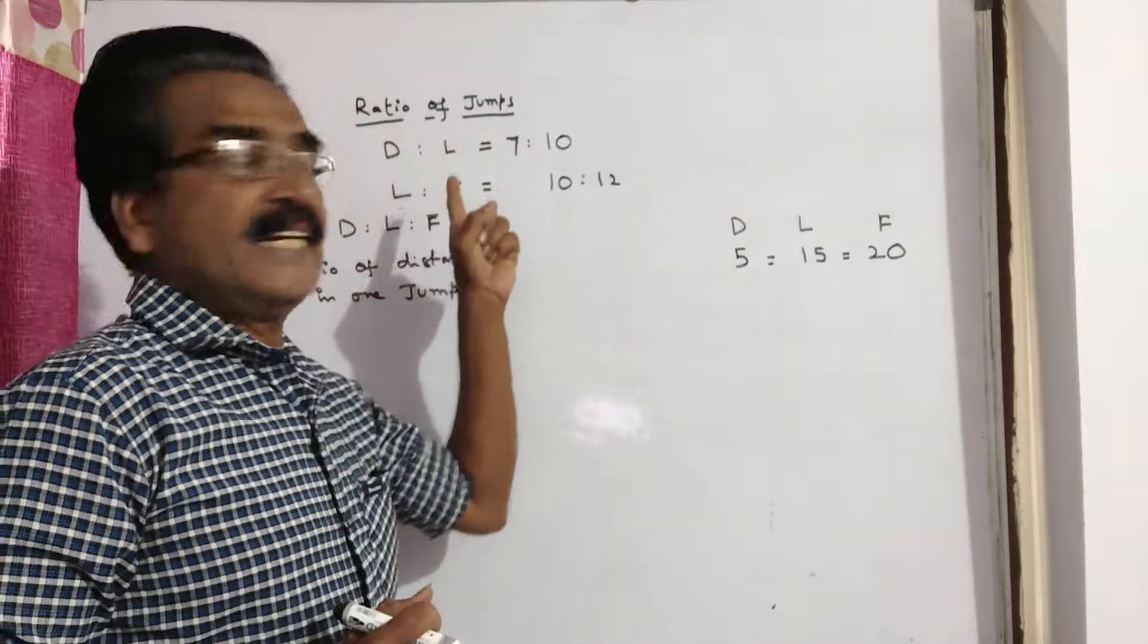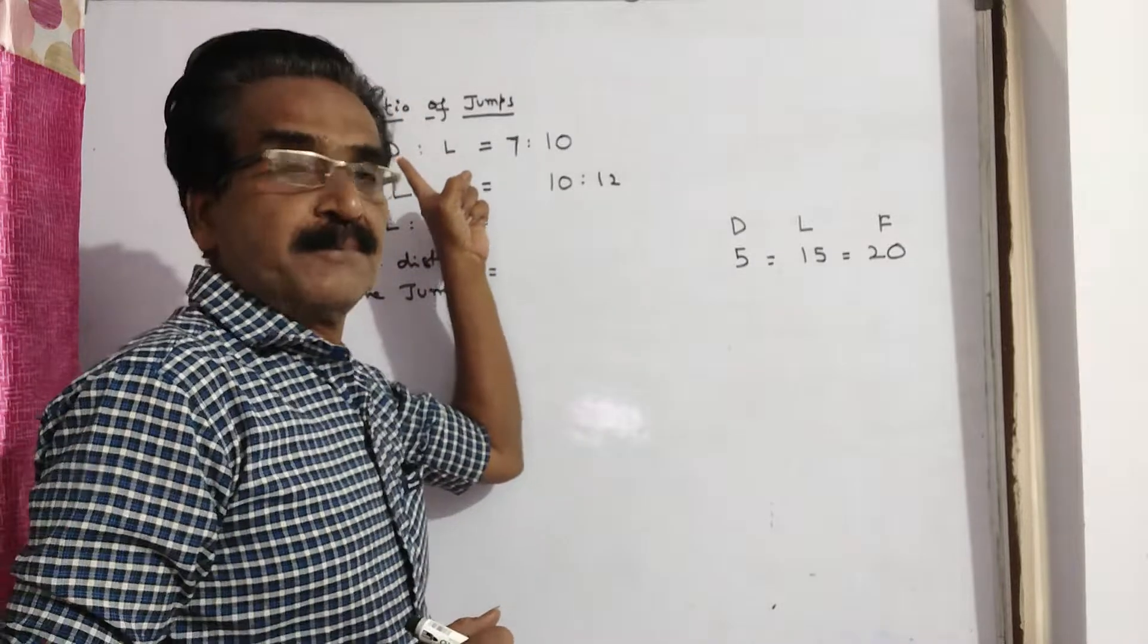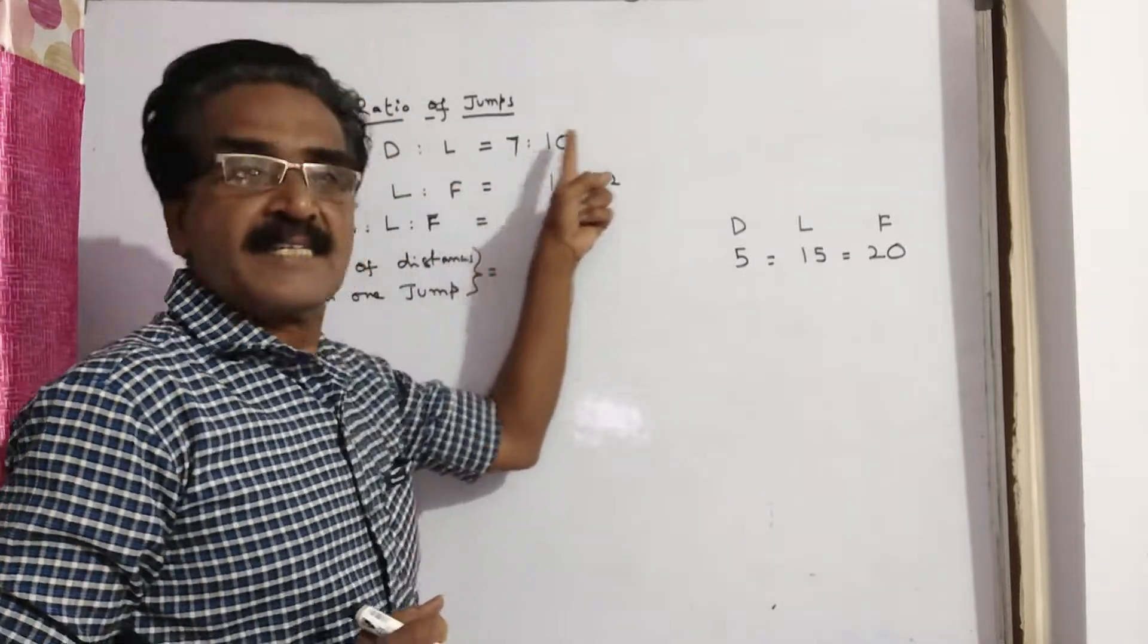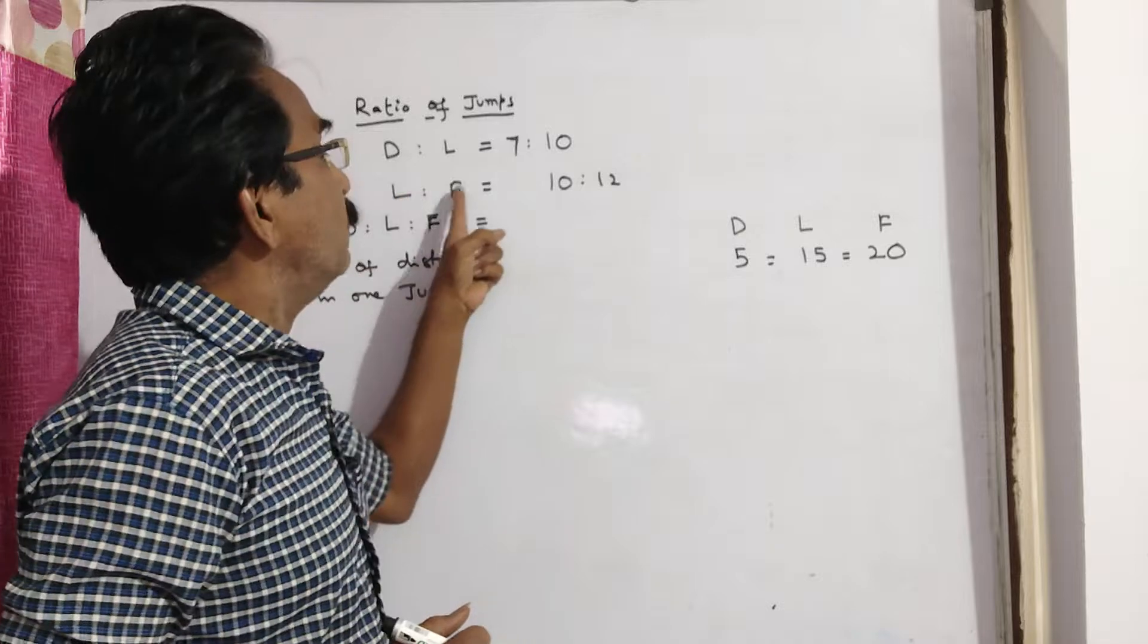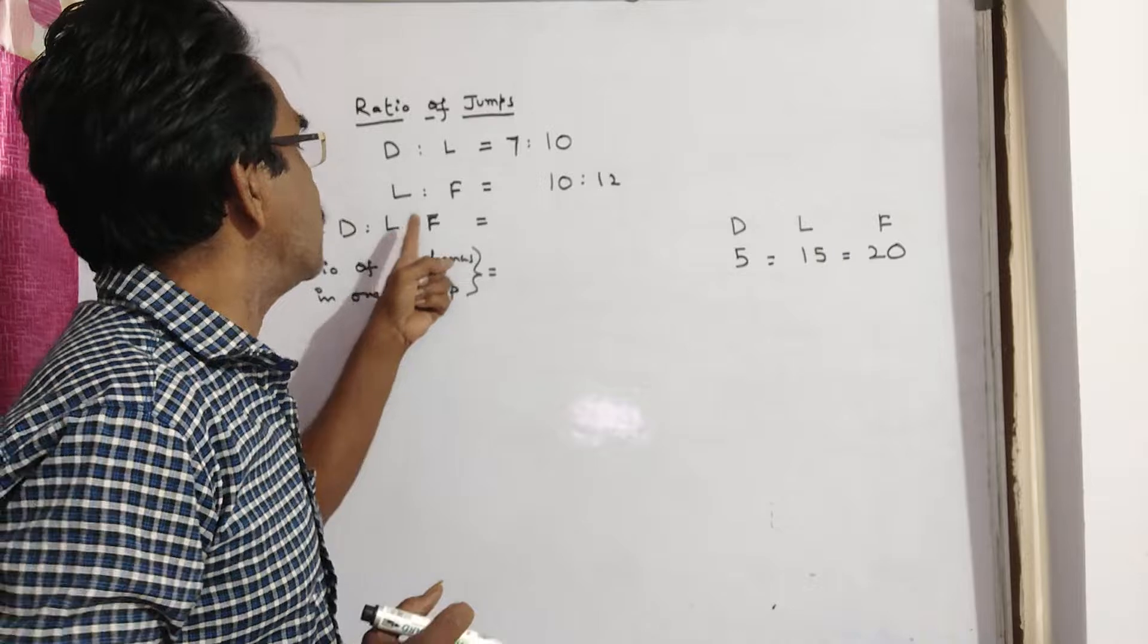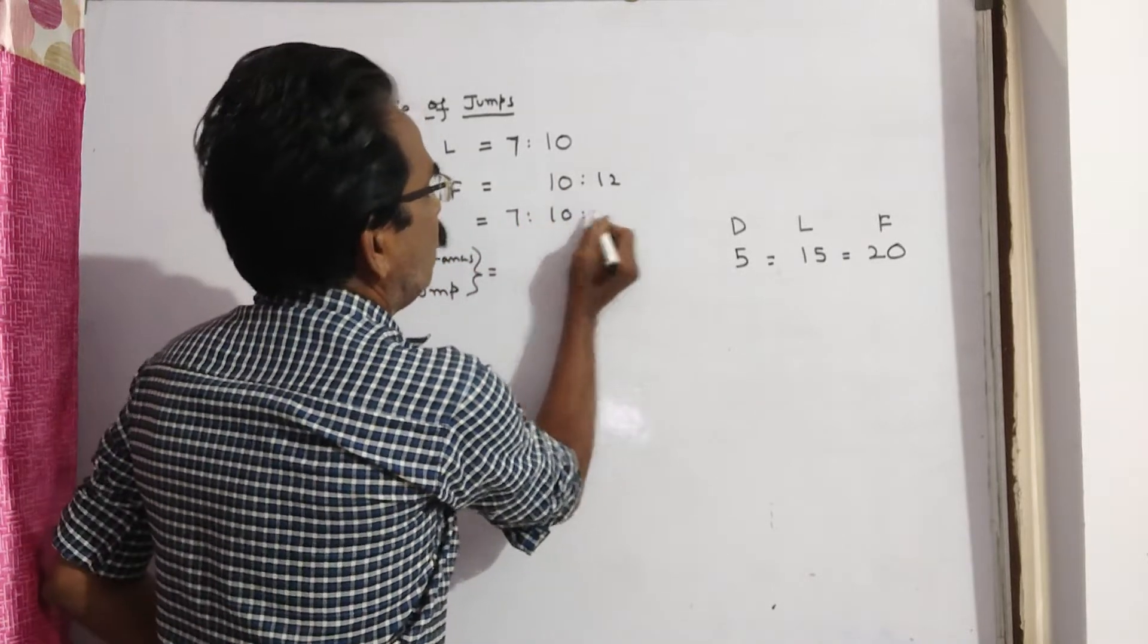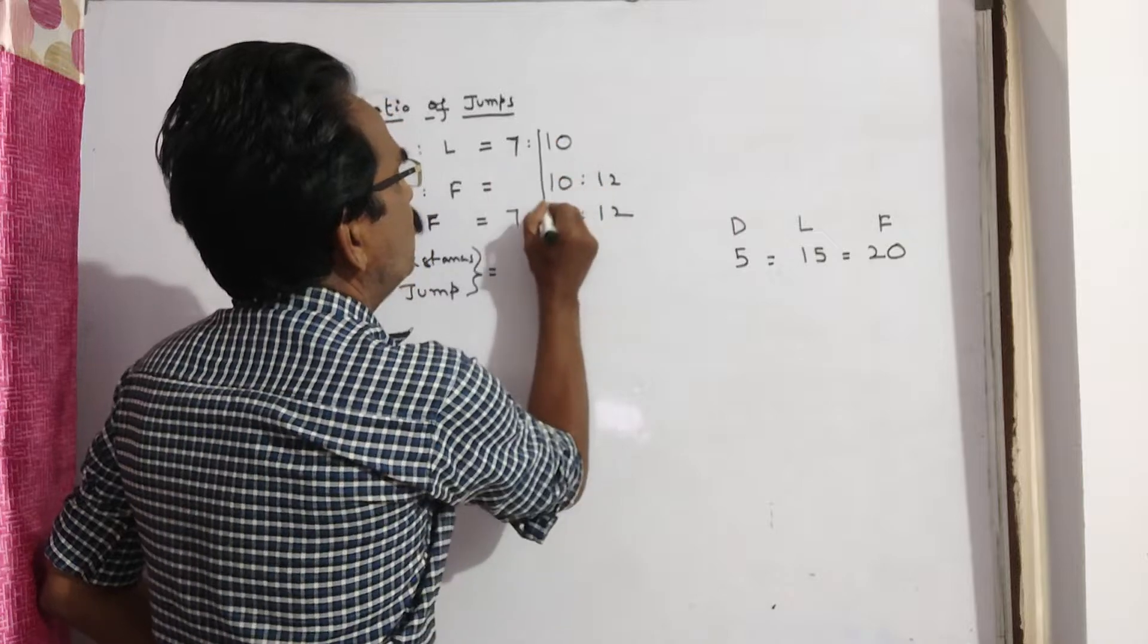First, let us find the ratio of jumps. The ratio of jumps of dog to lion is 7 to 10, lion to fox is 10 to 12. Therefore, the ratio of dog to lion to fox equals 7 to 10 to 12.